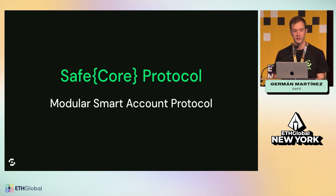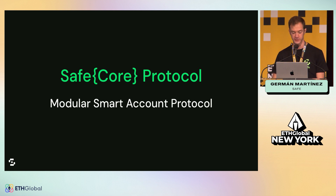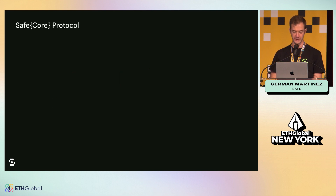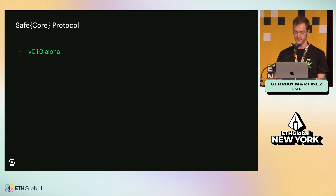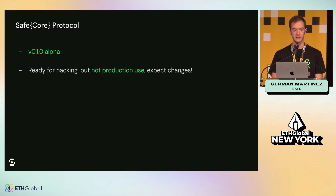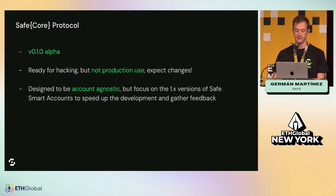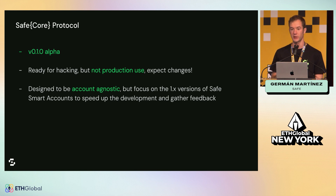In the last couple of months, the team at Safe has been working on the Safe Core Protocol that tries to fix these three topics. It's still in alpha, version 0.1. It's ready for hacking so you can use it this weekend, but it's not production ready yet, so expect changes and things to break. It's also designed to be account agnostic, but for now we are focusing on Safe Account version 1.x to make the development processes faster and to get some feedback.